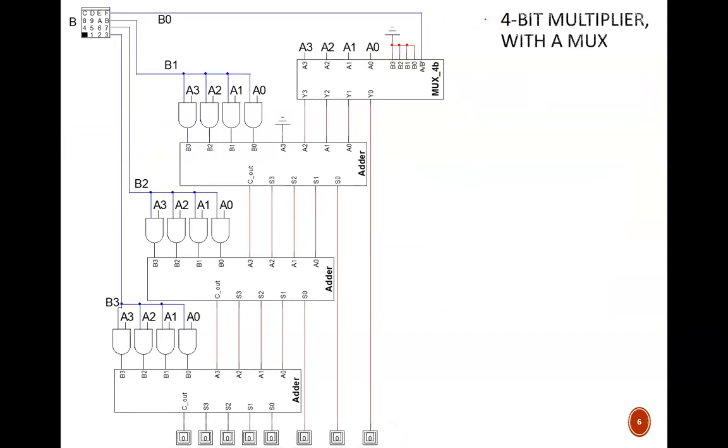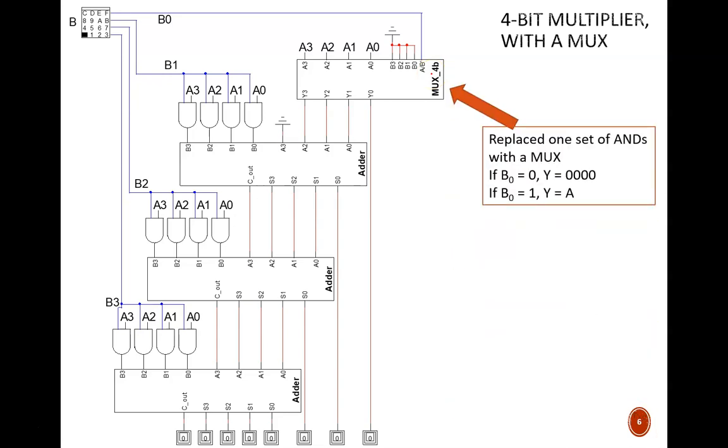In the final slide here, we make one tweak to the circuit on the previous slide, replacing the first set of AND gates with a 4-bit MUX. As mentioned earlier, we can use a MUX to act as a multiplier. We connect the A values to the A ports. We connect ground to all of the B ports. And we use the B0 bit as the data selector. If B0 is 0, the ground inputs are selected, providing a partial product of 0000. If B0 is 1, then all 4 bits of the given A value are selected.